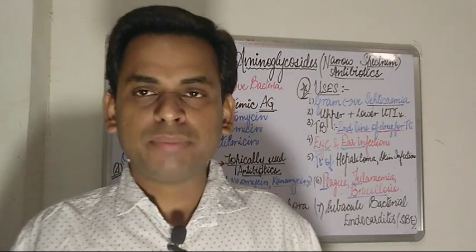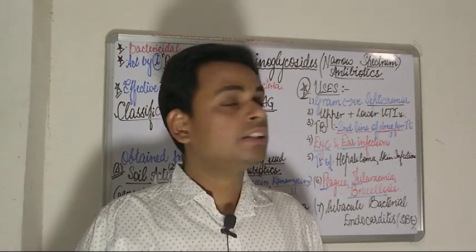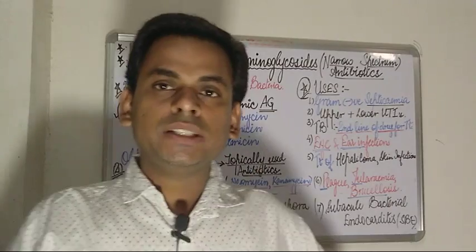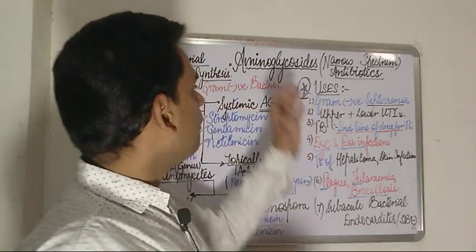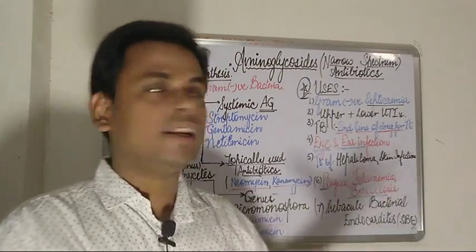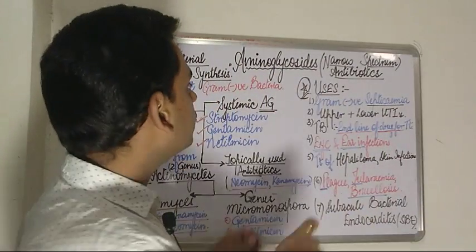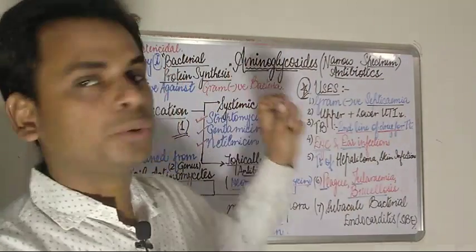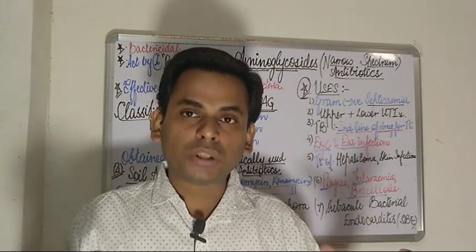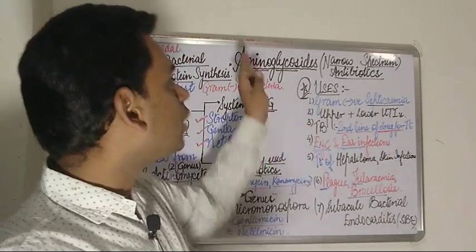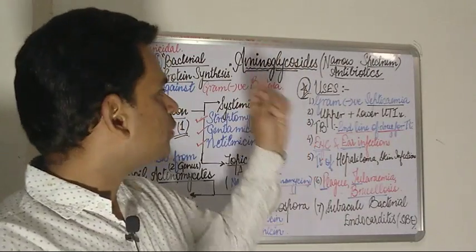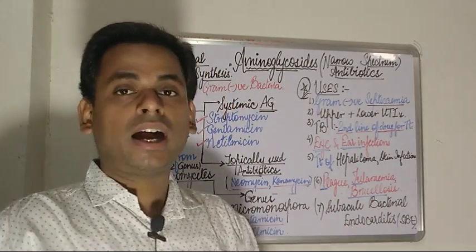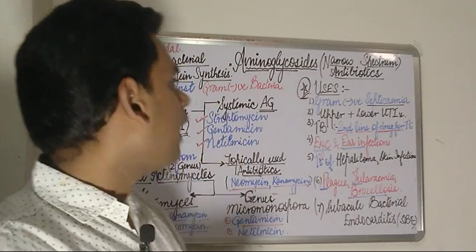Moving on to the another class of antibiotics, that is the aminoglycosides. These aminoglycosides have got their names as follows: 'glyco' means sugar and 'amino' means the sugar is going to have an attached amino group. These are large organic compounds which have attached amino sugars to them, and hence they are called aminoglycosides. They are broadly called narrow spectrum antibiotics.